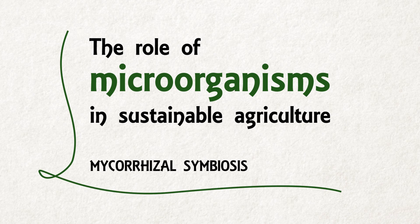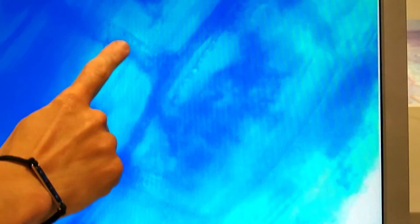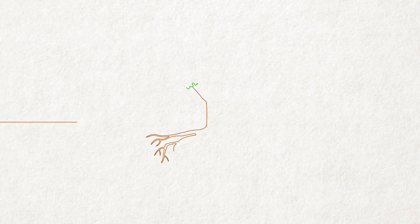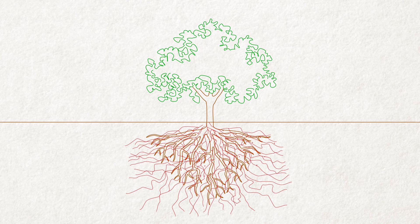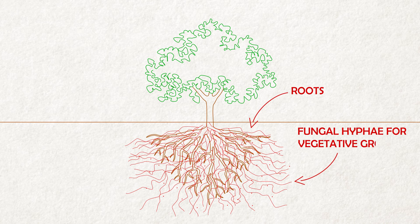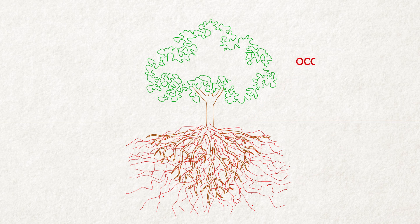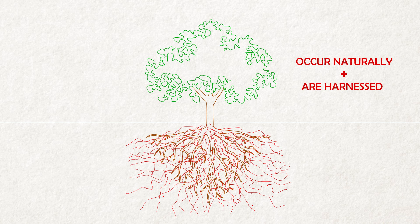Mycorrhizal symbiosis: this chapter will treat a small sample of the whole soil biodiversity. The mycorrhizal fungi form a kind of association with the plant roots called mycorrhizae — a mutualism in which plants expand and interconnect their root system through symbiosis with a fungus. These relationships occur naturally and can provide a range of benefits to the host plant, which is why these symbioses are harnessed in agricultural applications.